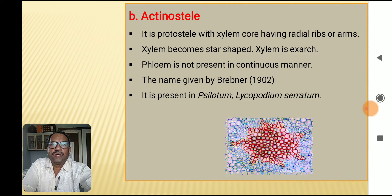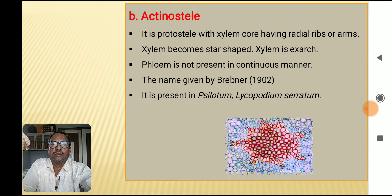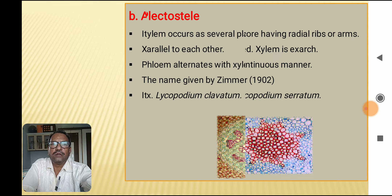The second type is actinostele. It is a protostele with a xylem core having radial ribs or arms, making the xylem star-shaped. The xylem is exarch. The phloem is not present in a continuous manner. The name was given by Brevner in 1902. It is present in Selaginella and Lycopodium. The diagram shows the actinostele.